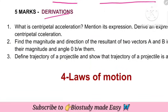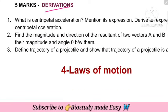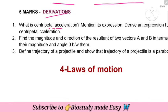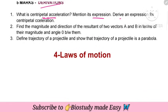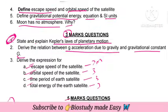Five-mark derivations: what is centripetal acceleration and its expression — that is the derivation. Next, find the magnitude and direction of the resultant of two vectors A and B in terms of their magnitude and angle between them.